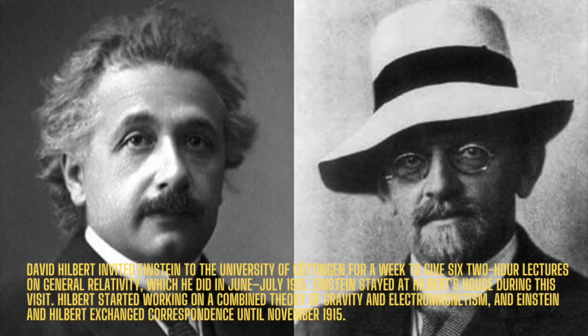At the end of June 1915, Einstein spent a week at the University of Göttingen, where he lectured for six two-hour sessions on his still-incorrect October 1914 version of what would become general relativity. Two of those present were giants in the world of mathematics: David Hilbert and Felix Klein. Shortly after, Einstein and Hilbert began an exchange of letters on the outstanding problems in Einstein's theory, and now matters quickly came to a head.